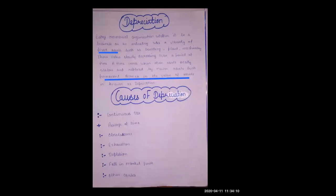The sixth cause is a fall in market price. When we buy fixed assets, they are not meant for resale. When there is a decrease in both book value and market value, the difference between book value and market value is treated as depreciation. Other causes include accidents — when the value of an asset falls to zero due to an accident, that loss is also treated as depreciation.